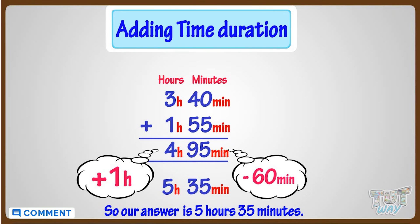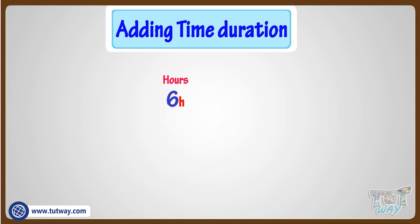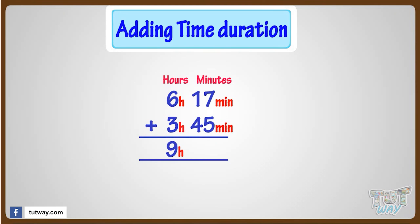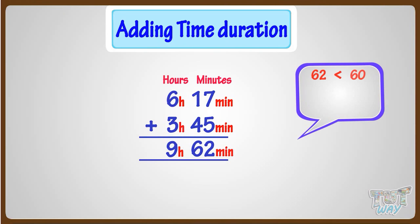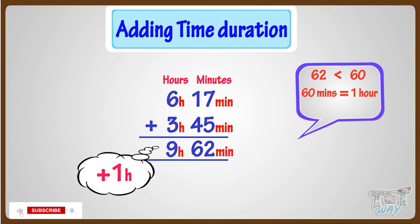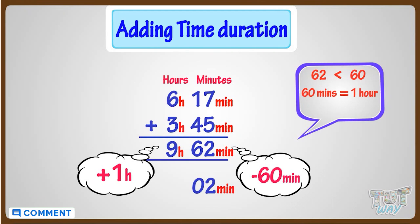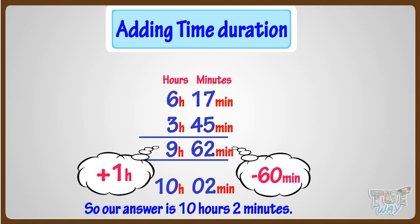Now let's take another example. We have to add 6 hours 17 minutes to 3 hours 45 minutes. Adding hours, we get 9 hours. And adding minutes, we get 62 minutes. Here, the minutes are more than 60, and we know 60 minutes make an hour. So add 1 to hours and subtract 60 from minutes. Subtracting 60 from minutes, we will be left with 2 minutes. And by adding 1 to hours, we get 10 hours. So our answer is 10 hours and 2 minutes.